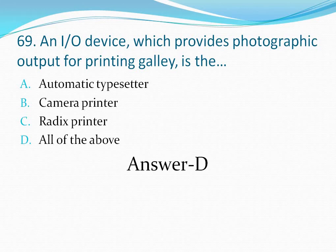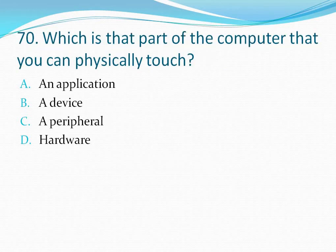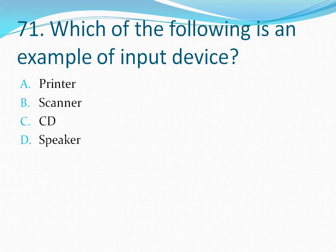Question number 70: Which is that part of the computer that you can physically touch? Your options are: option A an application, option B a device, option C a peripheral, option D hardware. The correct answer is option D — hardware.